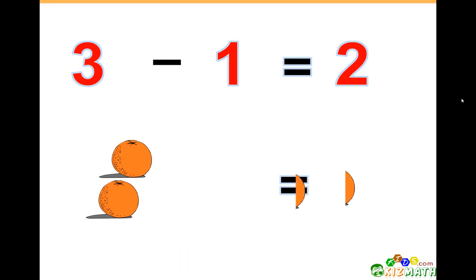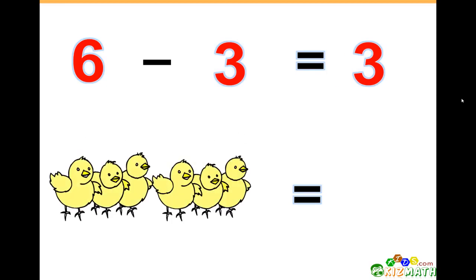6 minus 3 equals 3. We have six birds. If we take away three of those birds, there are only three birds left.